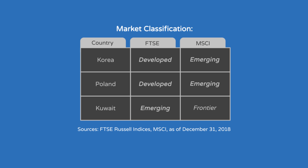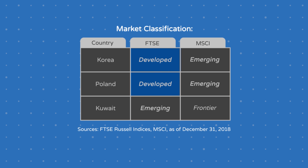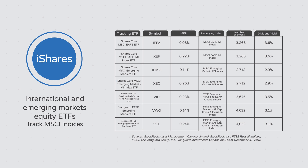In our last two videos, we found that index providers FTSE and MSCI currently disagree on how to classify Korean markets, as well as a few other smaller countries' markets. FTSE allocates Korean stocks to its developed market indices, while MSCI allocates them to its emerging markets indices. We also learned that the iShares International and Emerging Markets Equity ETFs follow the MSCI indices, while the Vanguard International and Emerging Markets Equity ETFs follow the FTSE indices.